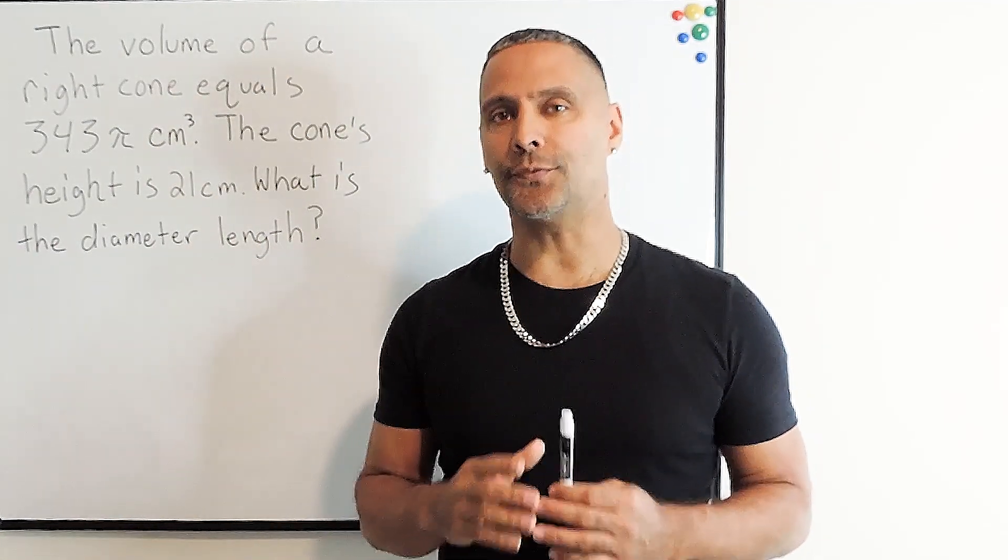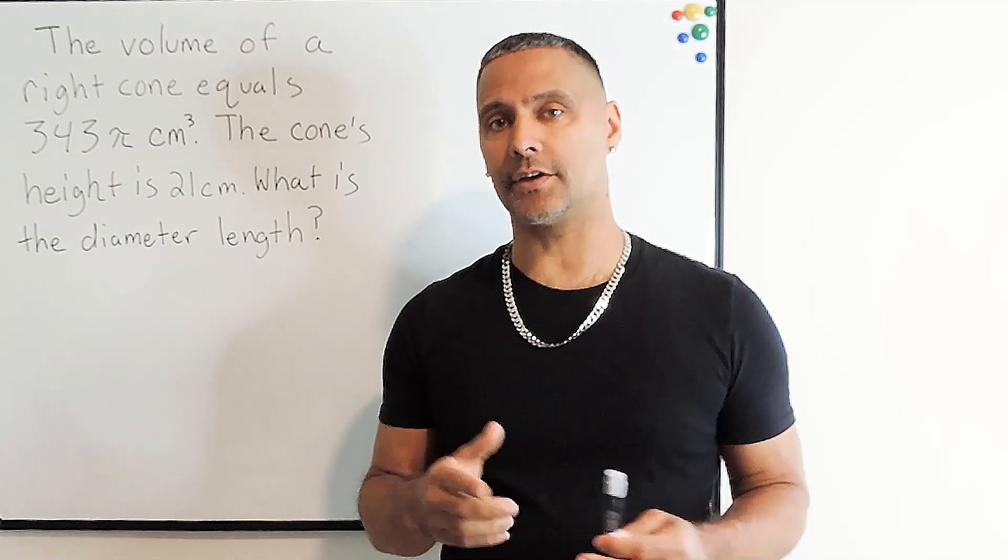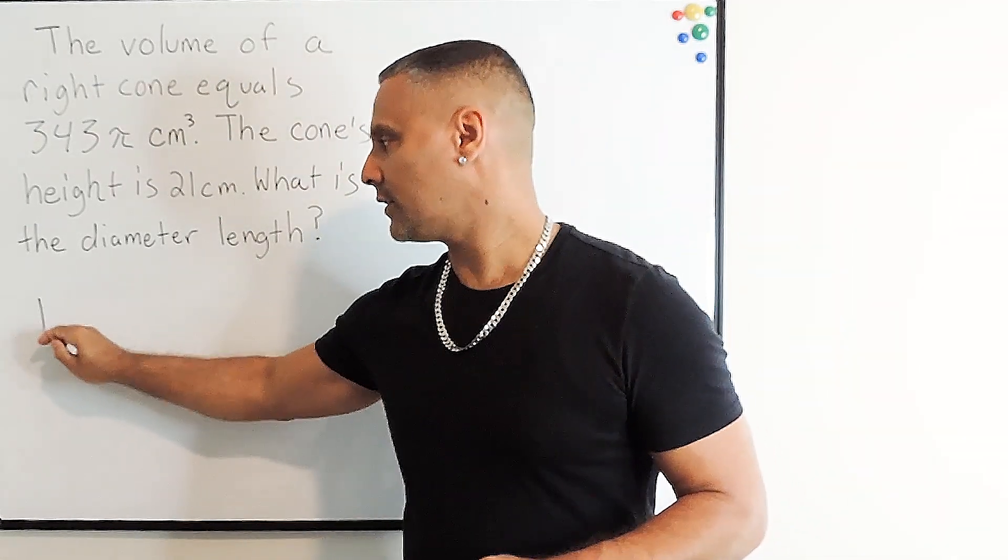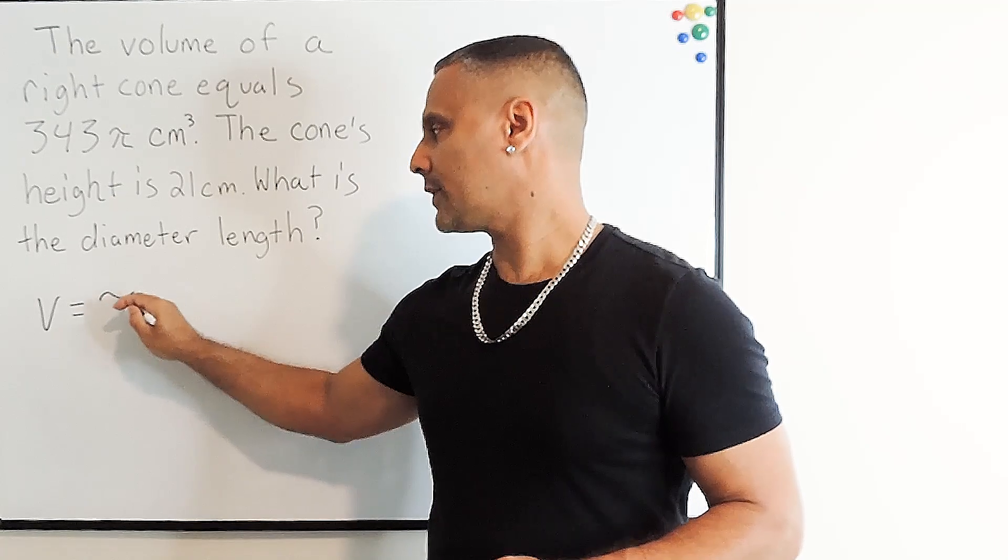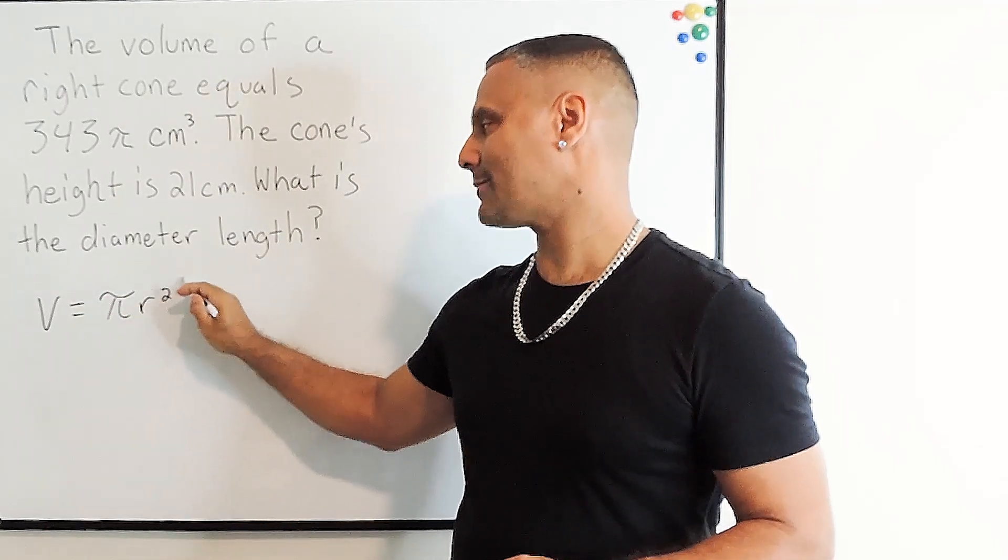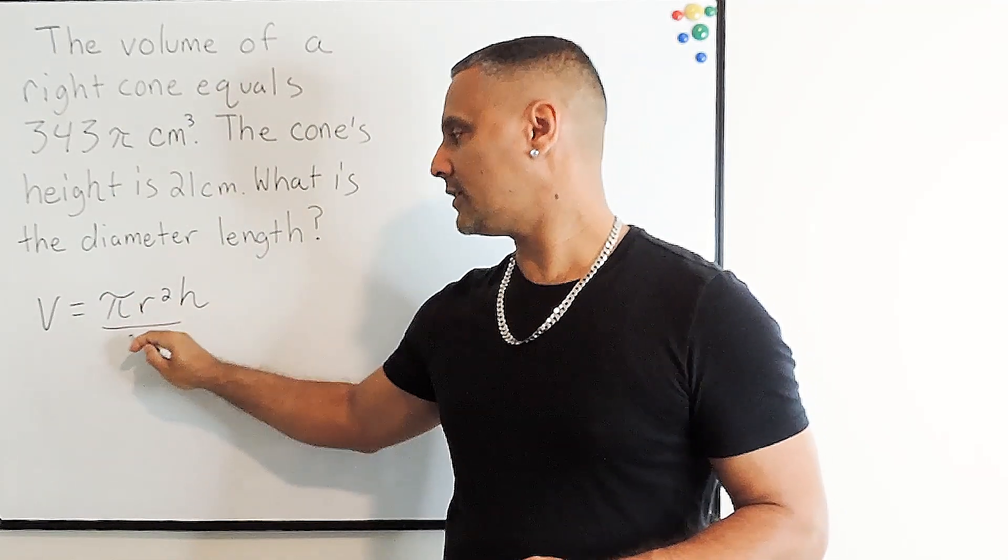The first thing we're going to do is state the formula that gives us the volume of a cone, which is V equals π times radius squared times the height of that cone divided by 3.